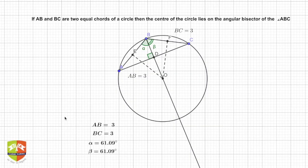Hello friends, so we are back with another theorem. This theorem says that if AB and BC are two equal chords of the circle, then the center of the circle lies on the angle bisector of angle ABC.